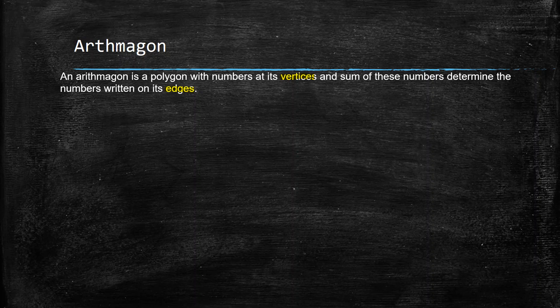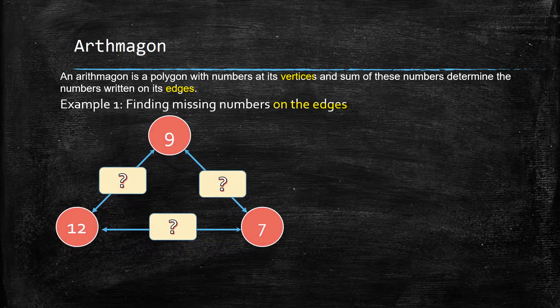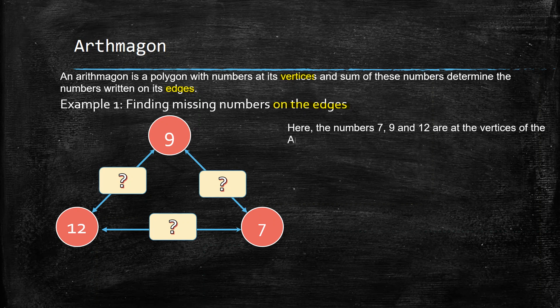To find the number written on edges, we add the numbers at the vertices. A polygon is just any shape with more than two sides. Let's have Example Number 1: finding missing numbers on the edges. We are going to focus on edges first. Here we are given three numbers written at the vertices and we are asked to find the numbers written on the edges.